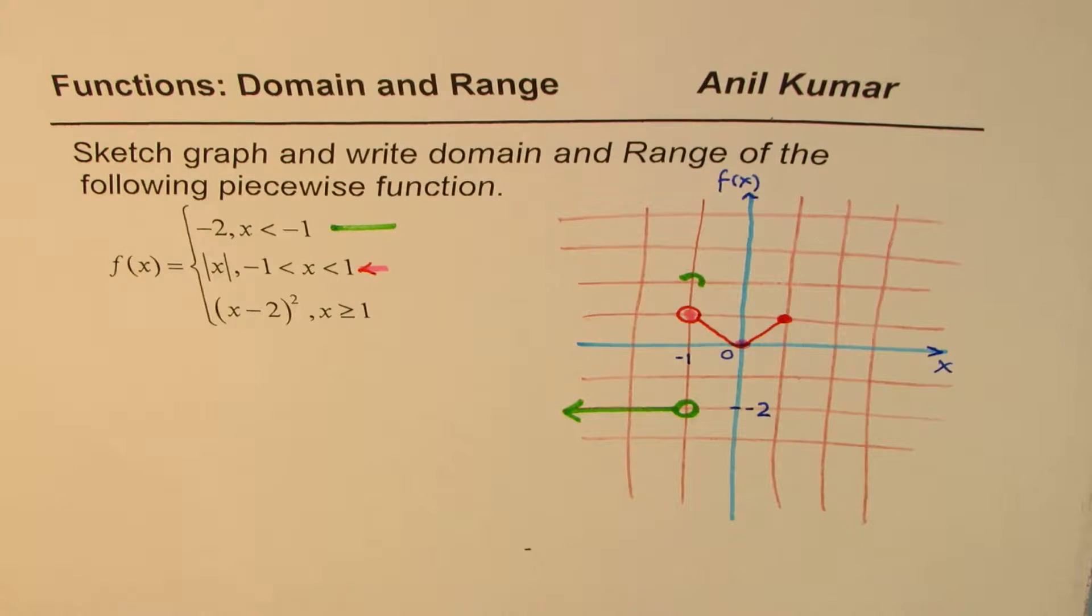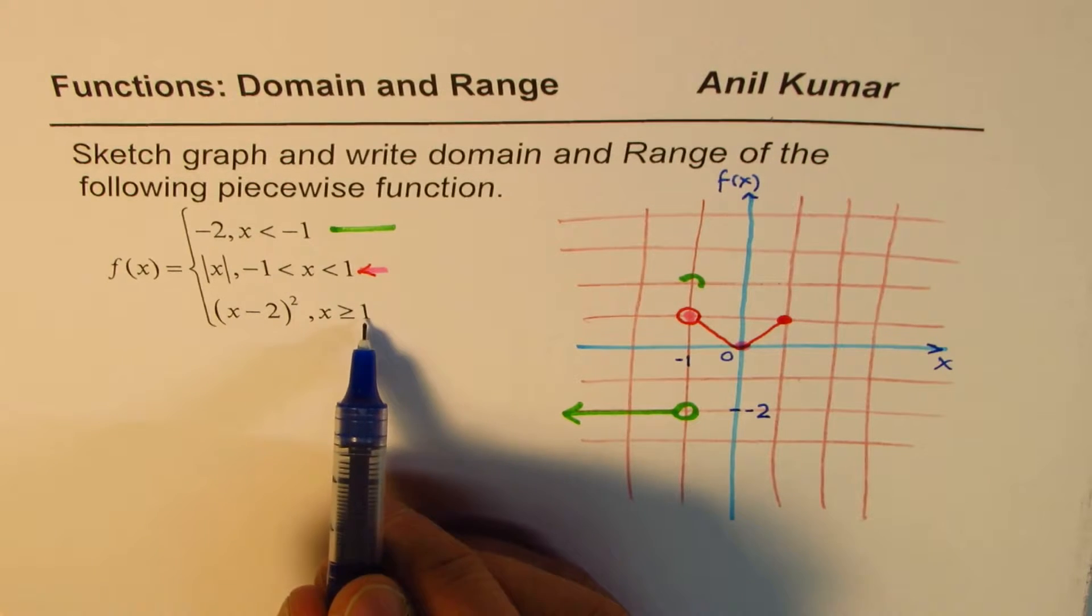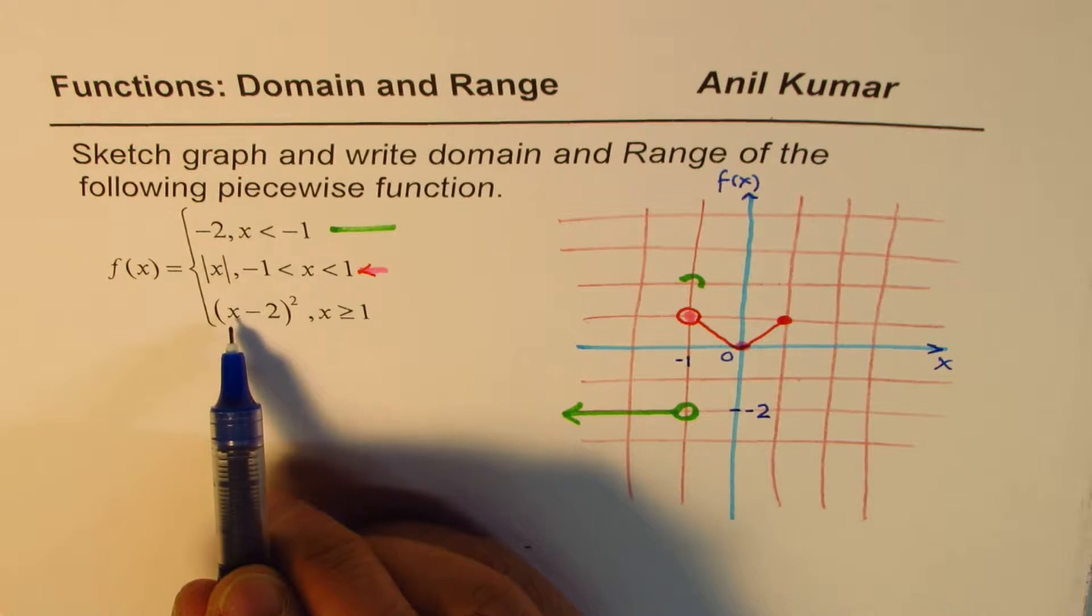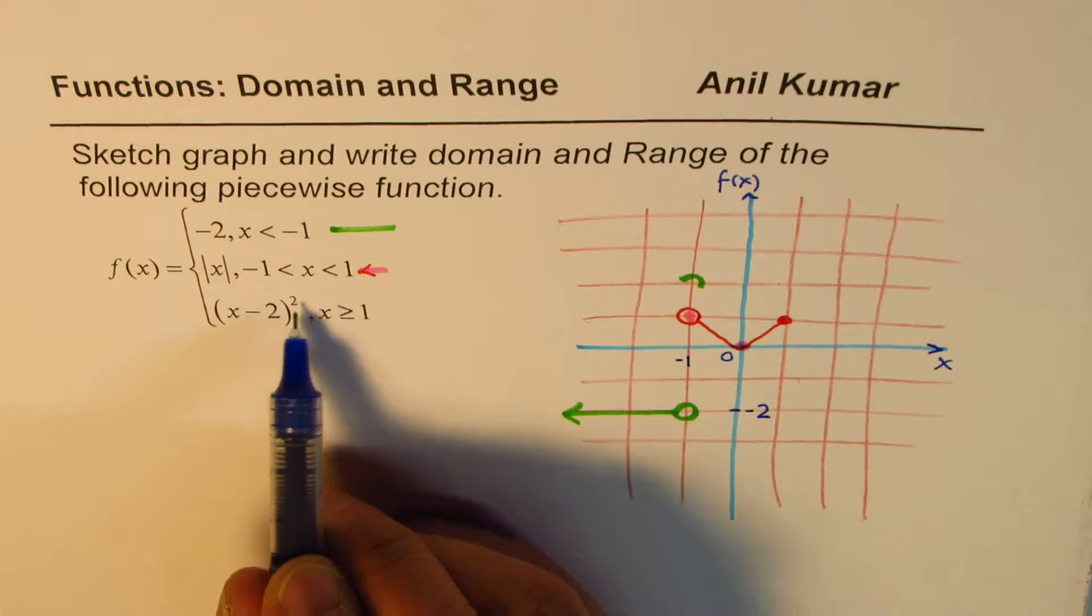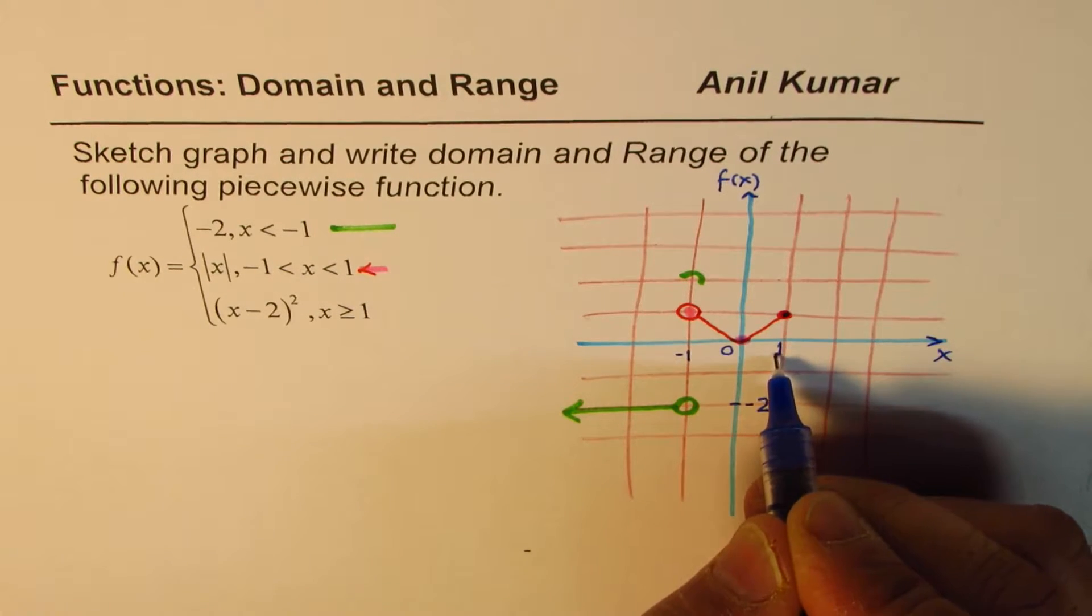Now let me take up the third part, which is x minus 2 whole square when x is greater than 1. So let us take x as 1. In that case, the value will be 1 minus 2 whole square, that is 1. So at 1, we have this value 1.